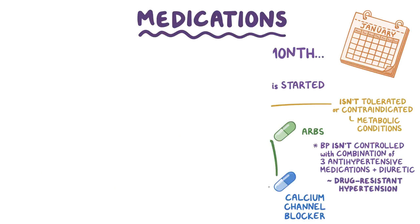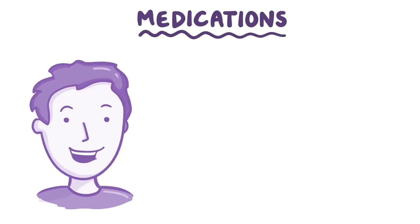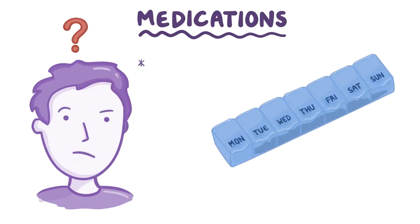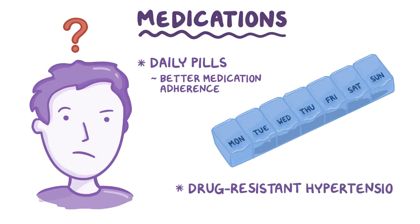Often, patients with hypertension feel pretty well and forget to take their hypertension medications. That's why regimens of daily pills have better medication adherence compared to twice-daily pills. When there's a patient with drug-resistant hypertension, it's important to confirm that they are actually taking the medication.